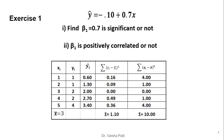Exercise number 1. Y-cap is equal to minus 0.10 plus 0.7x. This is a linear regression equation calculated from a given set of 5 points, that is n equal to 5. x is independent variable and y is dependent variable, and the records are (1,1), (2,1), (3,2), (4,2), (5,4) respectively. The first question is whether the slope is significant or not. We always check the t-test with the slope, so 0.7 is the slope and minus 0.10 is the intercept. The second question is whether beta 1 is positively correlated or not.